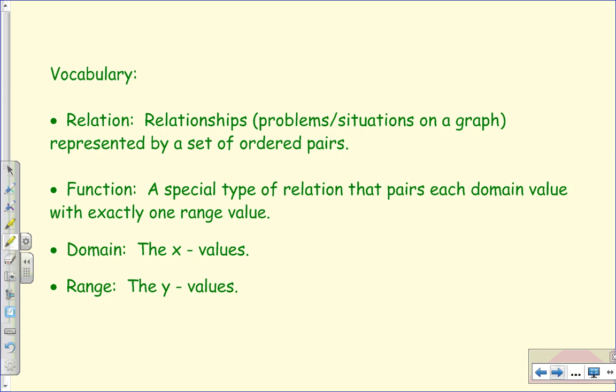Today we're going to learn about four main concepts. These are the vocabulary words. The first one is relation. A relation is represented by any set of ordered pairs. You see this all the time in data. Now, a function. A function is a type of relation, just like a poodle is a type of dog. So a function can be represented by a set of ordered pairs, but also we know that a function is where each domain value is paired with exactly one range value. We'll talk more about that later.